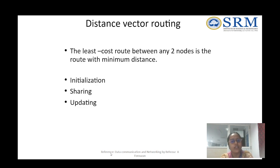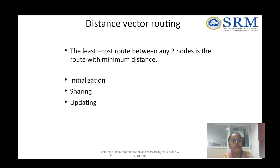Distance vector routing is a routing technology that identifies the least cost between any two nodes with a minimum distance. It involves three phases: initialization, sharing, and updating.